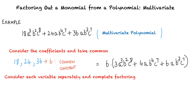First, let us consider the variable a. We have a cubed in the first term, a in the second term, and a in the third term. The variable raised to the lesser power is the common factor, and hence we can take out a as common.